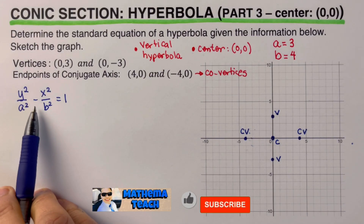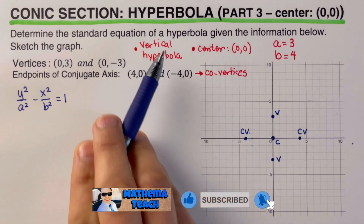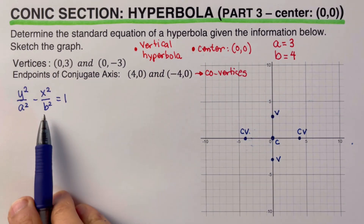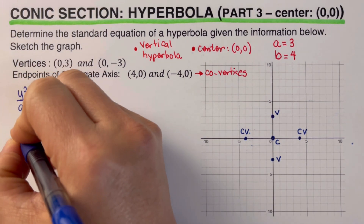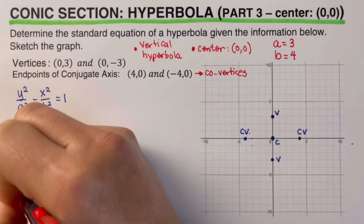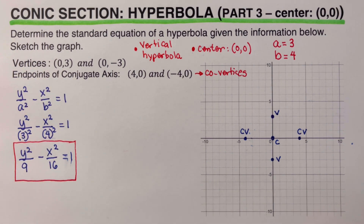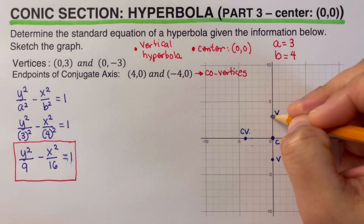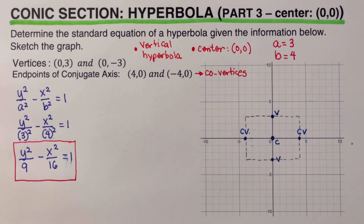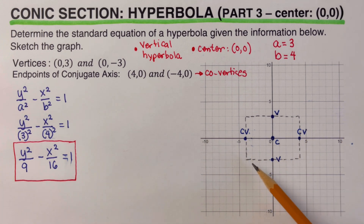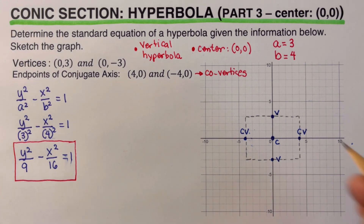We can now write the general equation of the vertical hyperbola. Plugging in our values — A = 3 and B = 4 — this is how the equation looks. We can also draw the rectangle that covers the two vertices and the two co-vertices, which will help us draw the asymptotes and sketch the hyperbola.